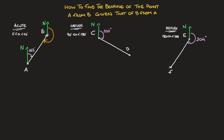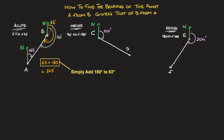One way of finding it is to extend line segment AB with a dotted grey line, and notice that since both northern lines are parallel, the angle the northern line makes with the dotted grey line and this 63 degree angle are corresponding and equal angles. So that angle at the top is 63 degrees. And since angles along a line add up to 180 degrees, the bearing we're trying to find is 63 plus 180, which equals 243 degrees.